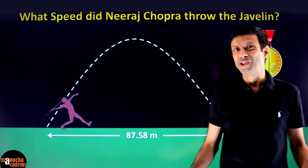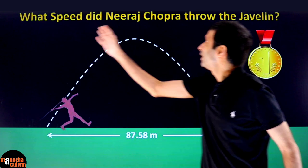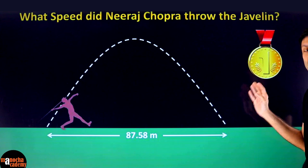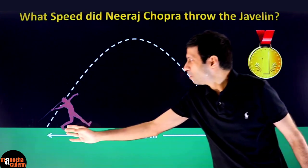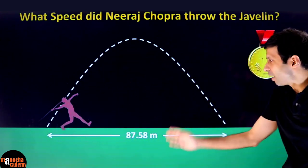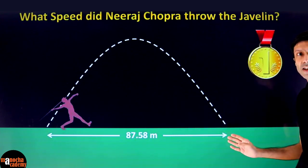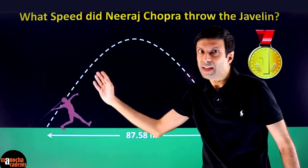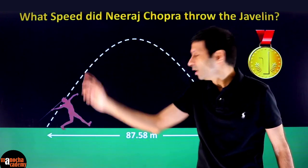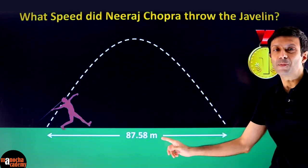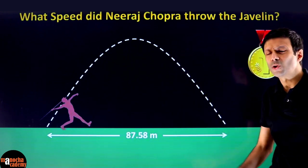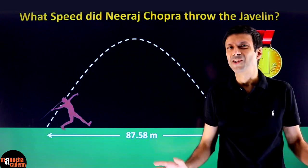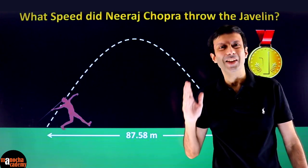And now the golden question: at what speed did Neeraj Chopra throw the javelin to win the gold medal for India? In his second attempt, he did an amazing javelin throw and covered a range of 87.58 meters, which won him the gold medal. So can we estimate at what speed he threw that javelin to cover this huge range of 87.58 meters? It's very simple — I'm going to apply some physics and a little bit of maths and make it really easy. Let's estimate his speed.